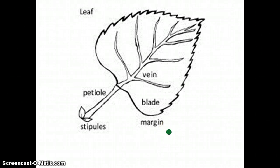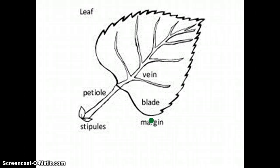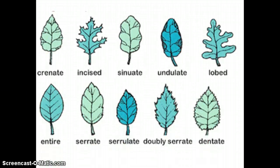We are learning about a leaf. A leaf has five parts, and we're going to start with the margin. The margin is the part of a leaf that defines its structure. I'm going to scroll down here and we'll look at all of the different margins.